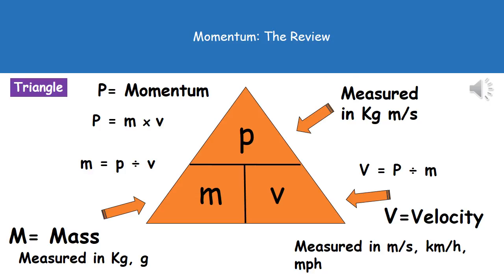To help us with rearranging this equation, obviously we can put that into one of our triangles. So all we've got is, because it's mass times velocity, mass and velocity go on the bottom, and momentum on the top. That'll then help you to make sure that no matter what they ask you to work out, you can rearrange it very easily.